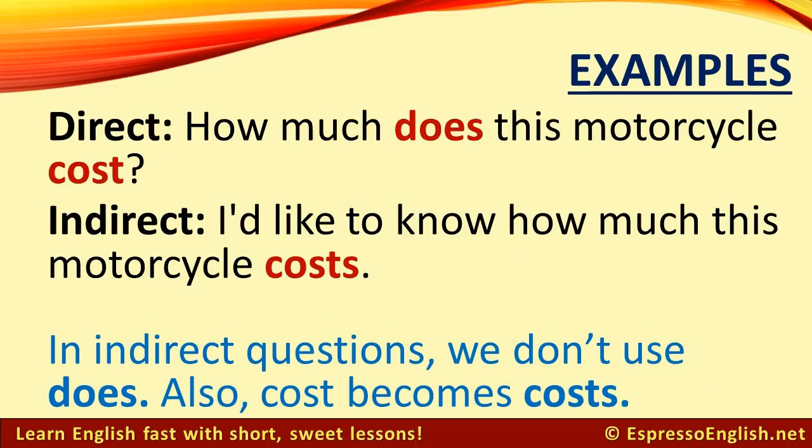Direct: 'How much does this motorcycle cost?' Indirect: 'I'd like to know how much this motorcycle costs.' Again, in indirect questions, we don't use the auxiliary verb 'does.' Also, 'cost' becomes 'costs.' You can see that this indirect question is not even really a question — it is more of a statement that invites the other person to answer.